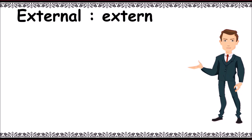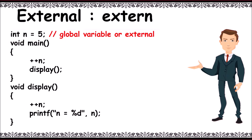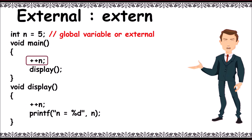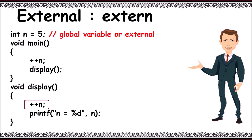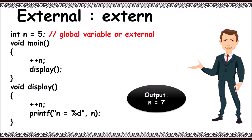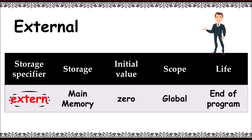External: variables declared outside of all functions are known as external variables. They can be accessed from any function inside the program. In this example, N equals 5 is an external variable, visible in both main and display functions. In main, N is incremented to 6, then the display function is called. Inside display, N is further incremented to 7 and prints N equals 7. Output is N equals 7. You can observe N is visible in both functions as it is declared outside the functions. The keyword to declare explicitly is extern. It uses main memory, the initial value is 0, scope is global, and lifetime is till the end of the program.